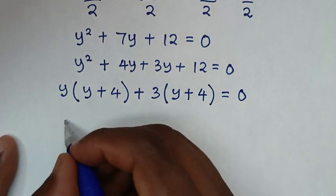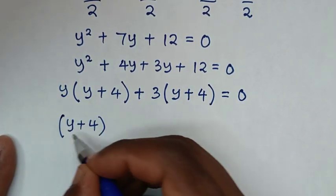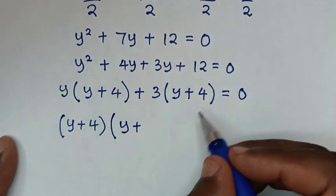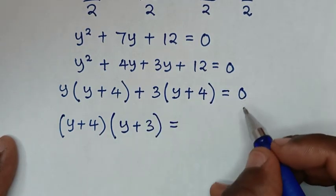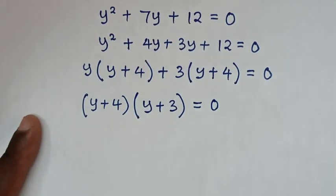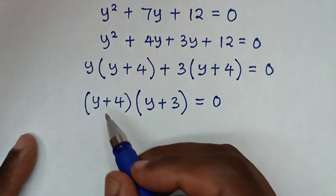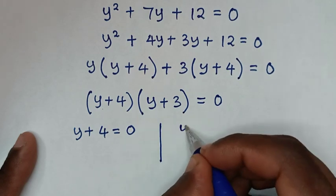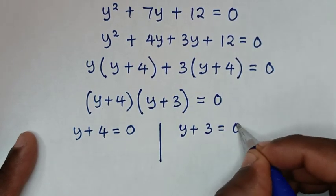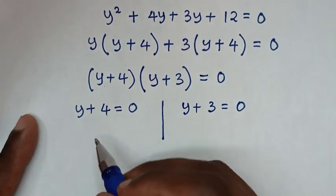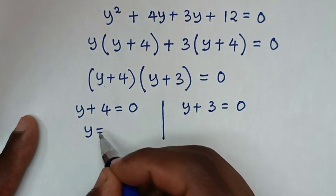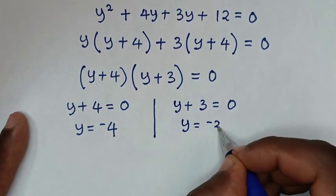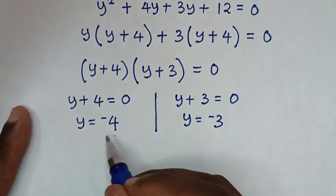Since (y plus 4) is common, we factor it out: (y plus 4)(y plus 3) equals 0. This gives two solutions: y plus 4 equals 0, giving y equals negative 4; and y plus 3 equals 0, giving y equals negative 3. We now have both values of y.